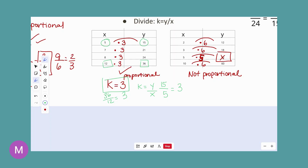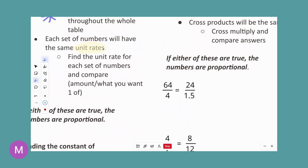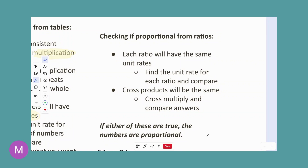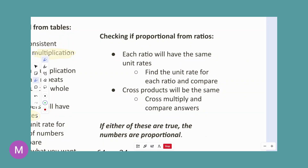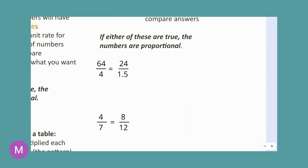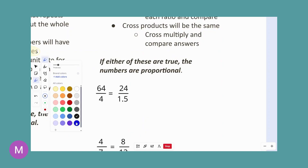Now, the last thing: if you're just given ratios, there are three ways to check if they're proportional. Each ratio will have the same unit rate, so compare the unit rates — if they're the same, you have a proportional relationship. You can also do cross multiplication: if the cross products are equal, you have proportional ratios. There's also a pattern method similar to the table approach, which I'll show you at the end.